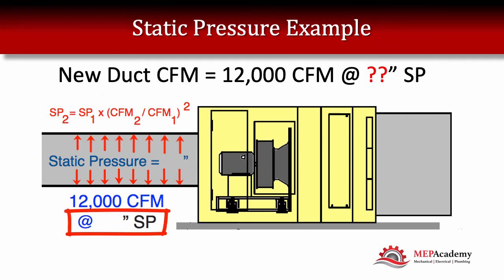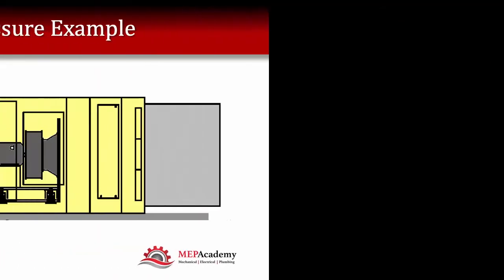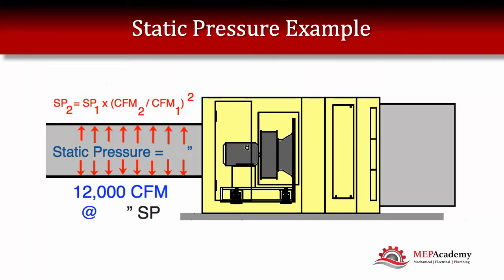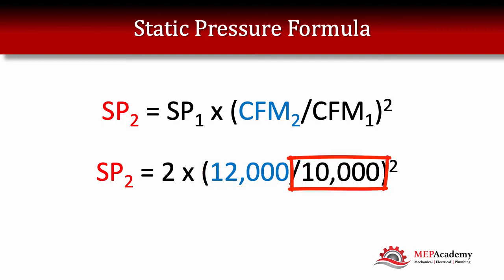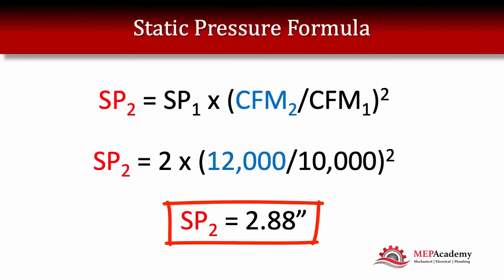How much static pressure will that equate to? We put 12,000 CFM into the formula where the 2 is — that's the new condition we want. We have 10,000 CFM as the existing condition and 2 inches of static pressure. Running that formula gives us 2.88 inches of static pressure.